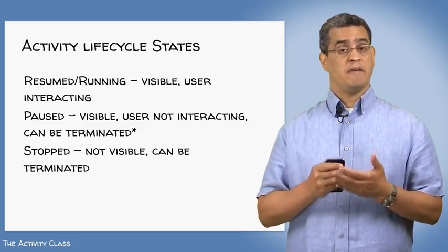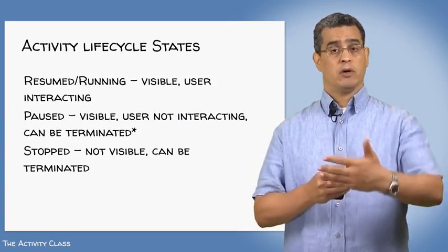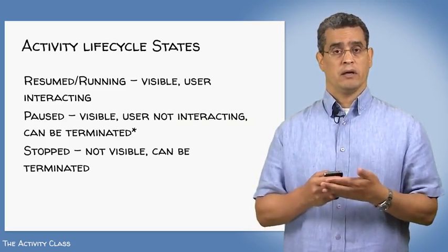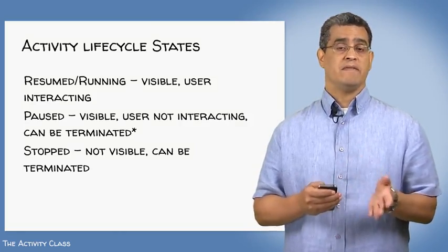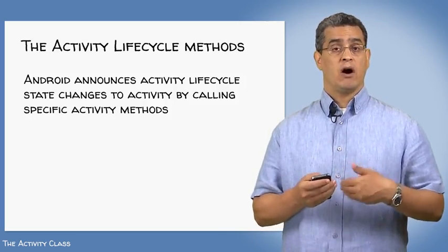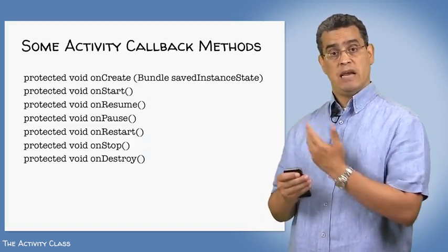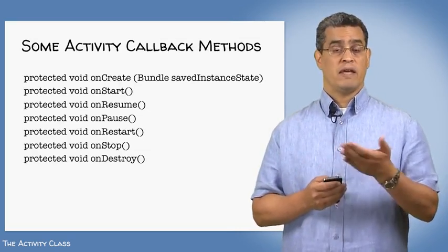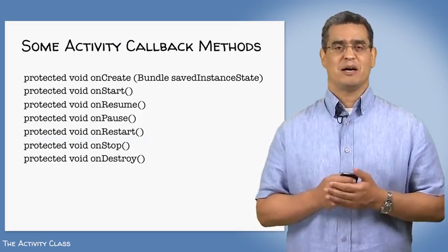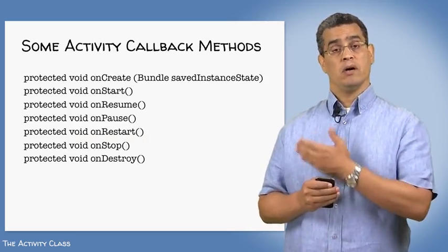Your activities will often need to behave differently during different parts of their lifecycle. For instance, if your activity is showing an animation but then pops up a partially transparent dialogue-style activity in front of it, you might want to pause the animation while the user responds to the dialogue, then restart it once that dialogue activity finishes. To support scenarios like this, Android announces lifecycle changes to your activity by calling specific lifecycle or template methods. Each is named 'on something': onCreate when the activity is about to be created, onStart when it's about to become visible, all the way to onDestroy when it's about to be destroyed. If you want to take specific action when your activity changes state, you need to override one or more of these methods.